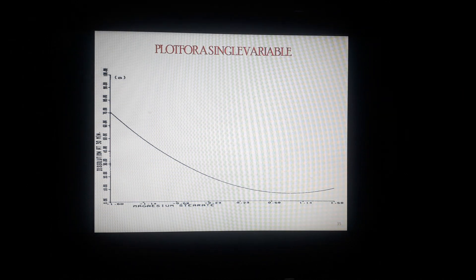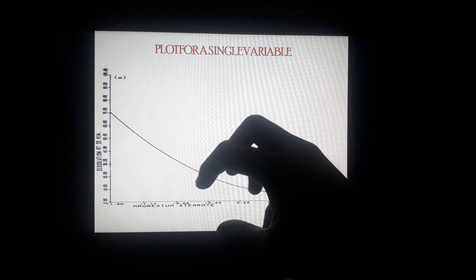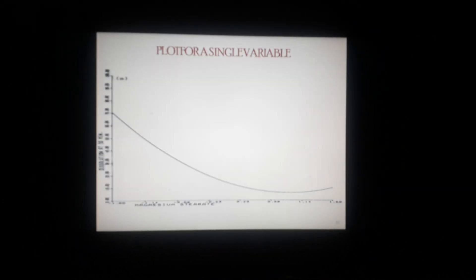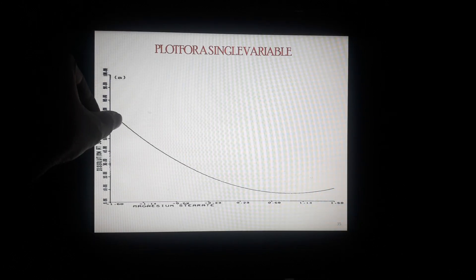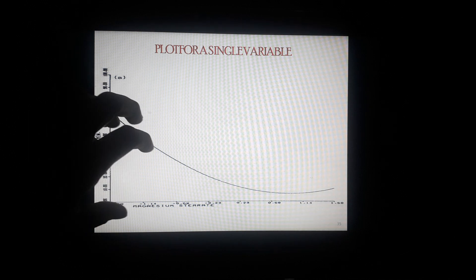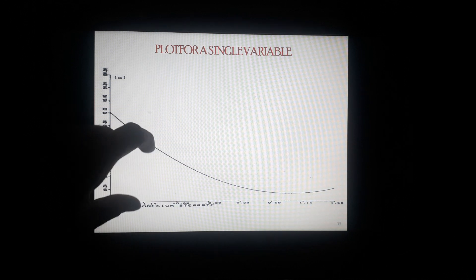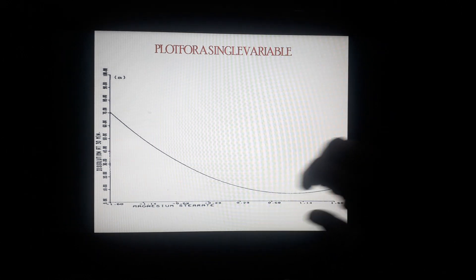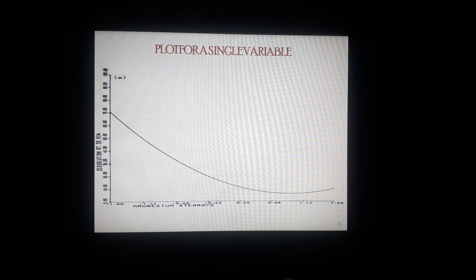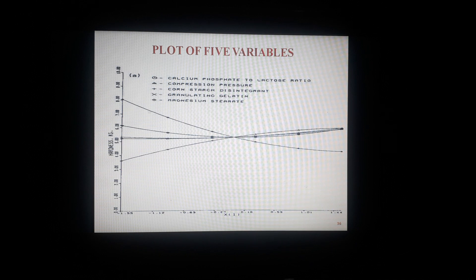For a single variable — magnesium stearate as x factor — we find the effect of x1 upon the dissolution rate of the tablet. When the concentration is at a lower level, the dissolution rate of the tablet is higher. When the concentration of magnesium stearate (x1) increases, the dissolution rate also decreases. At a certain level it forms a plateau, and from that point onward no further exponential growth of the dissolution is observed.